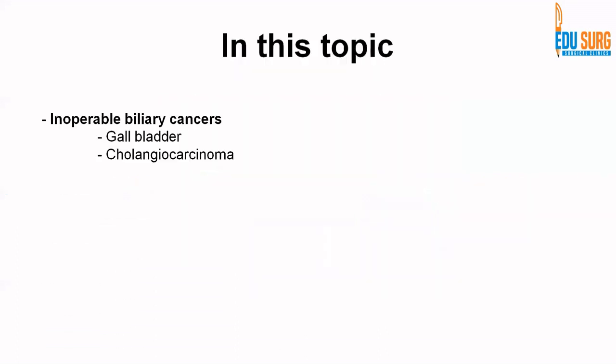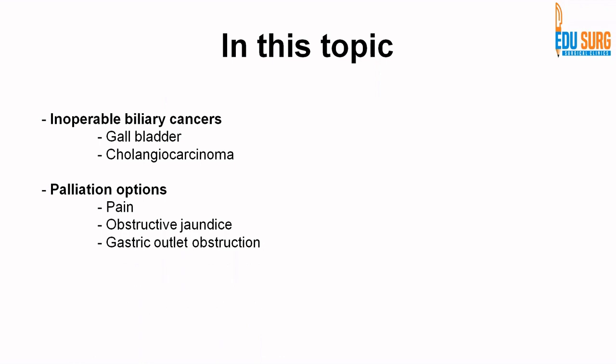In this topic we are going to see what is untreatable and what is inoperable, and why these patients are ideal for palliation. We will see different cases where gallbladder cancer and cholangiocarcinoma were inoperable in our experience. We will discuss palliation options for pain management, obstructive jaundice, and gastric outlet obstruction, focusing on intra- and extra-hepatic cholangiocarcinoma and gallbladder cancers. Palliation involves planning of symptomatic management as well as counselling, empathy, and education.